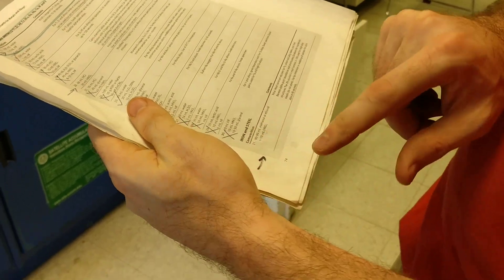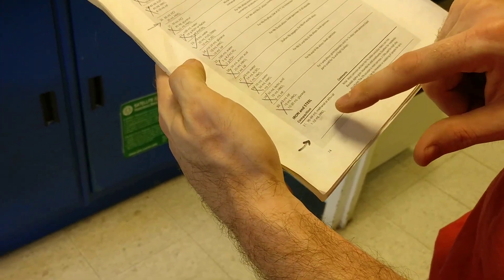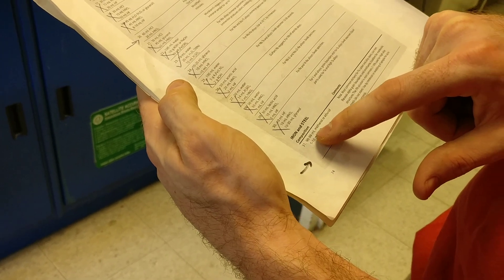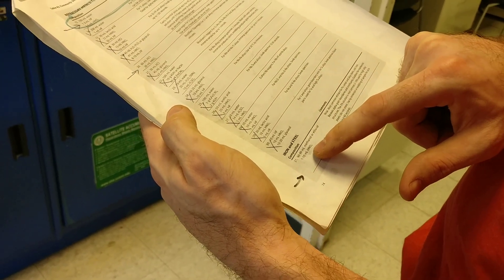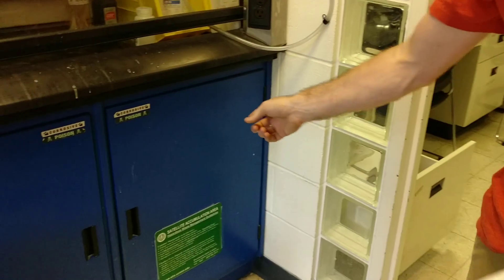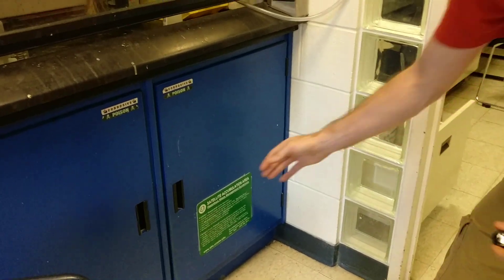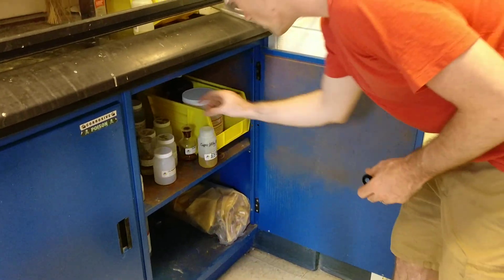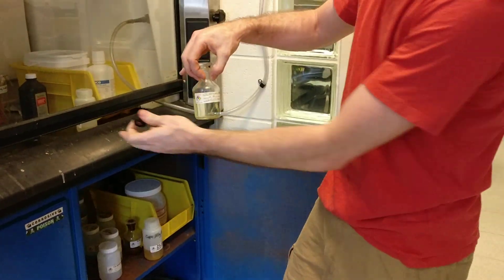So we have iron and steel here. We're going to see that this is called nitol, which is mostly methanol with a little bit of nitric acid in it. That is located underneath the fume hood here in this glass container.